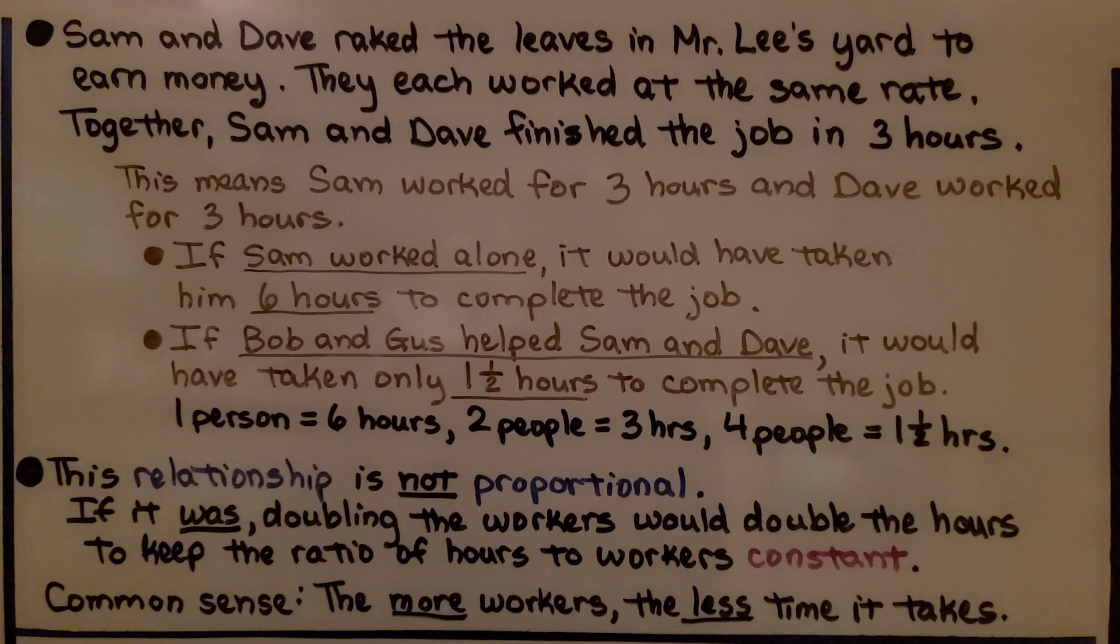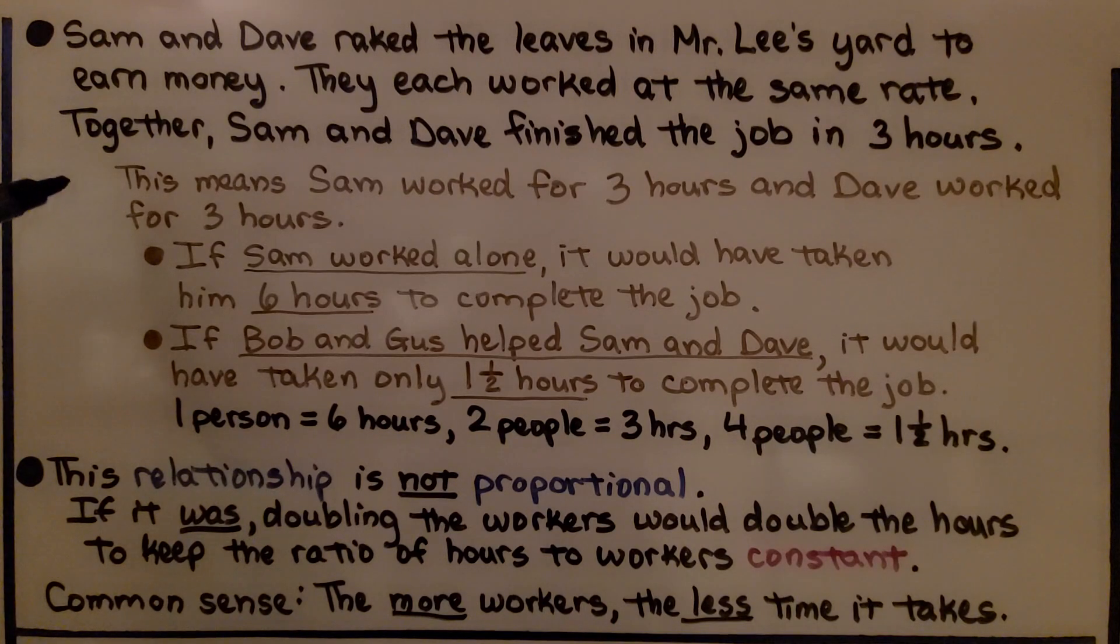Sam and Dave raked the leaves in Mr. Lee's yard to earn money. They each worked at the same rate. Together, Sam and Dave finished the job in 3 hours. This means that Sam worked for 3 hours and Dave worked for 3 hours.